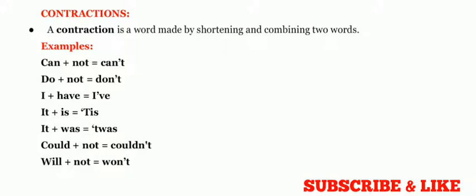Now the third one is contractions. What is contractions? A contraction is a word made by shortening and combining two words. So in contraction, we shorten and combine two words. That is known as contractions.